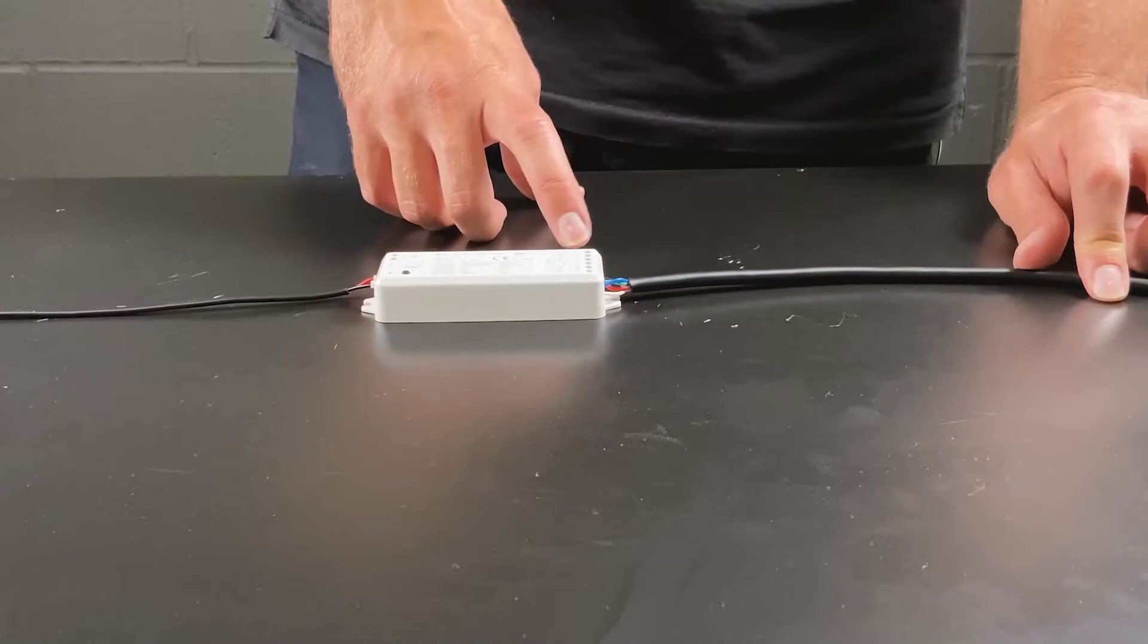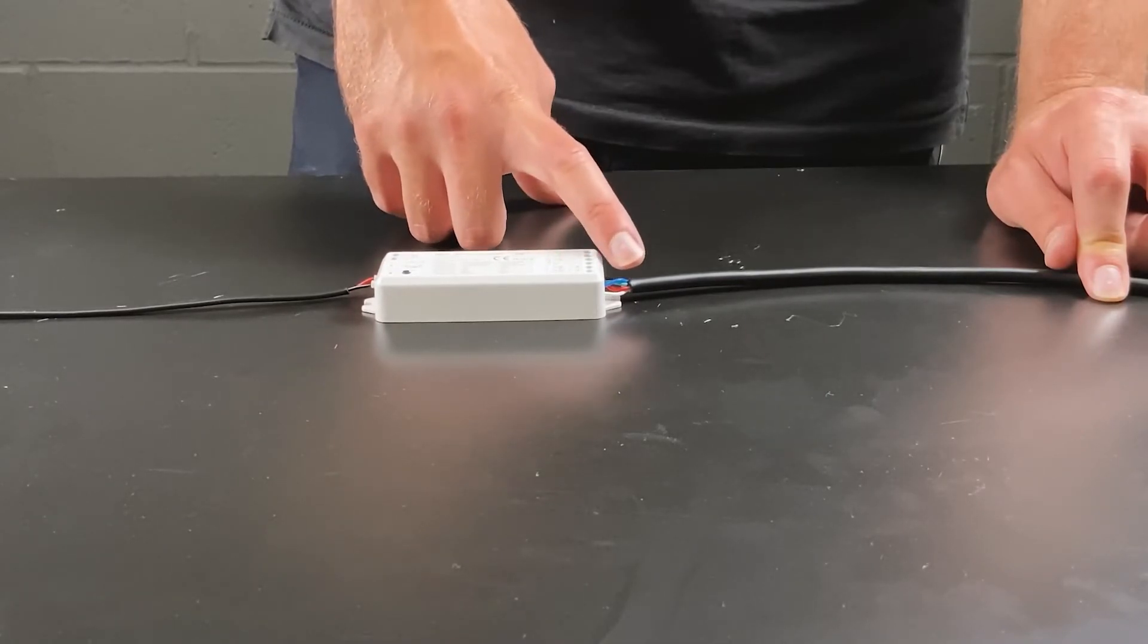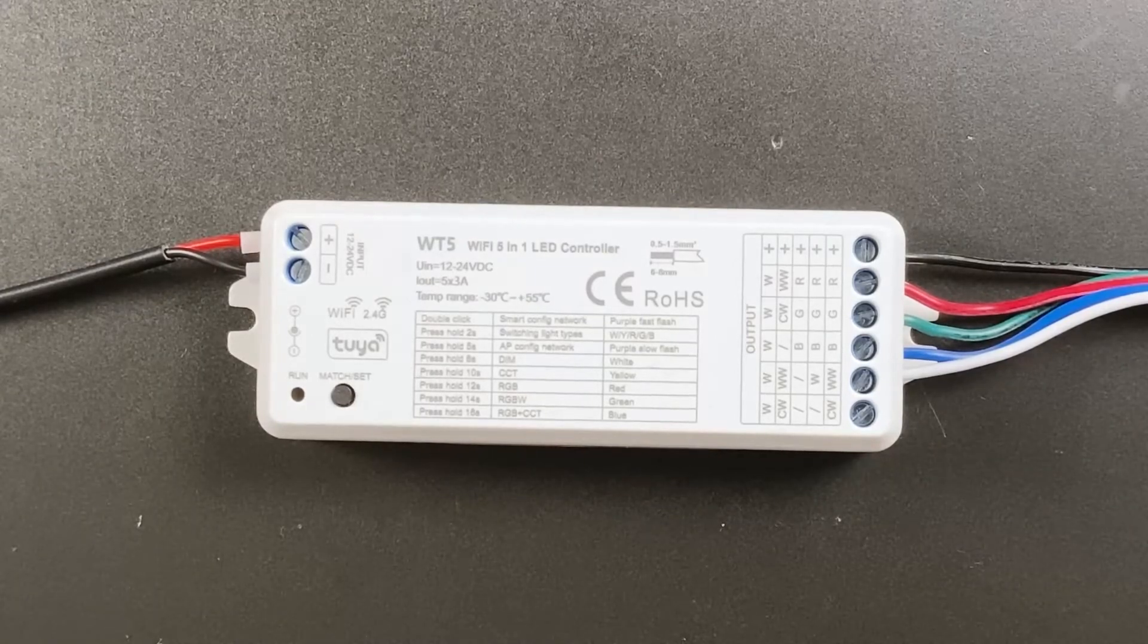For RGBW tape the black wire will go into the positive terminal, the red to the red terminal, green to the green terminal, blue to the blue terminal and the white channel on the RGBW tape can be wired into either of the remaining ports either CW or WW.